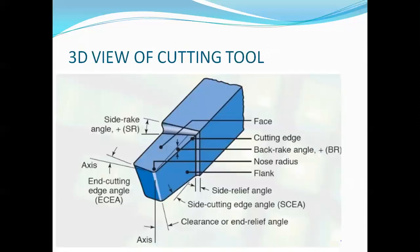These are the 3D views of the cutting tool. You can see here — this is the cutting point at the nose, which is the actual cutting point. Where the two cutting edges — the end cutting edge and the side cutting edge — meet together, this cutting edge indirectly touches the workpiece and helps in the required machining operation, and thus we get the chips coming out of the work material.